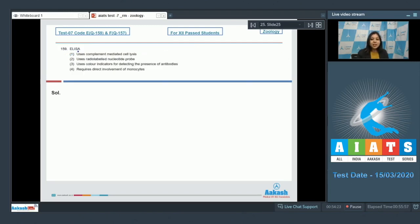Moving on to the next question students, question number 159: ELISA, that is enzyme linked immunosorbent assay. Number one, uses complement mediated cell lysis. This is incorrect as ELISA is based on antigen antibody interaction.